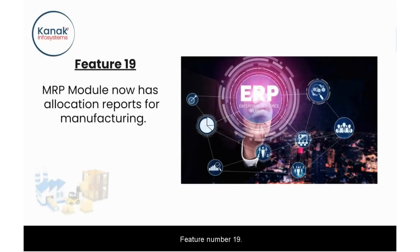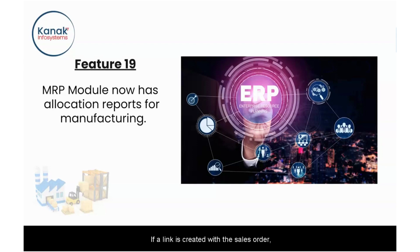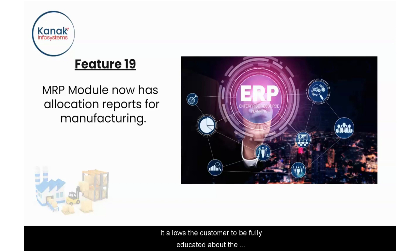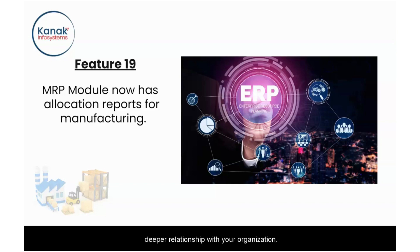Feature number nineteen: the MRP module now has allocation reports for manufacturing. If a link is created with a sales order, customers can now see the live status of their manufacturing order at every stage from their personalized customer portal. It allows customers to be fully informed about their manufacturing process and maintain a close relationship with your organization.